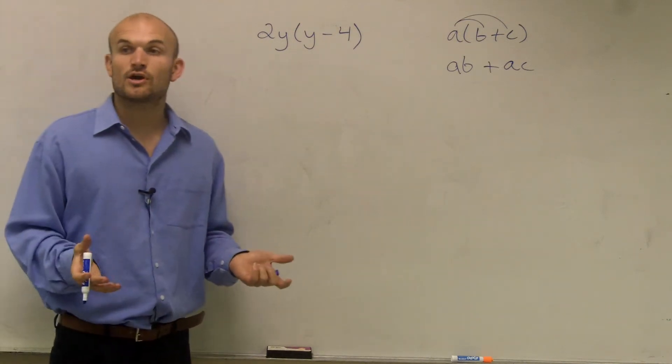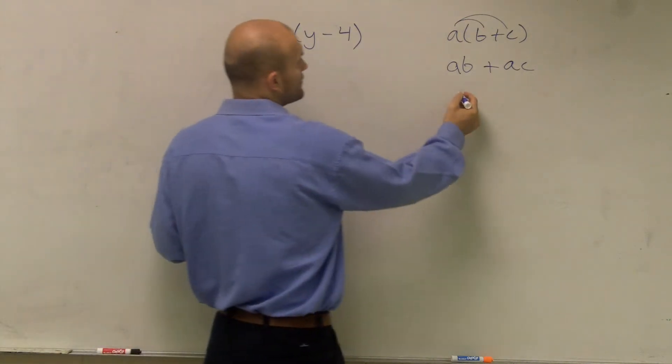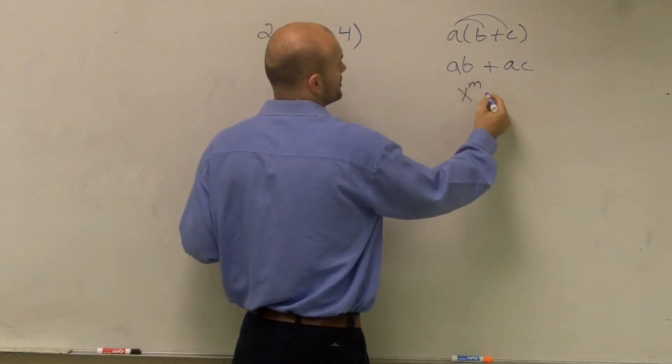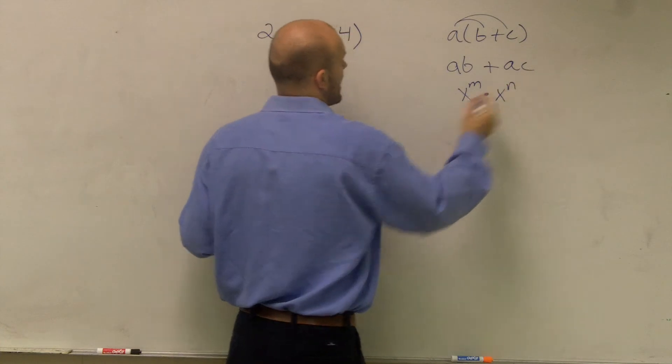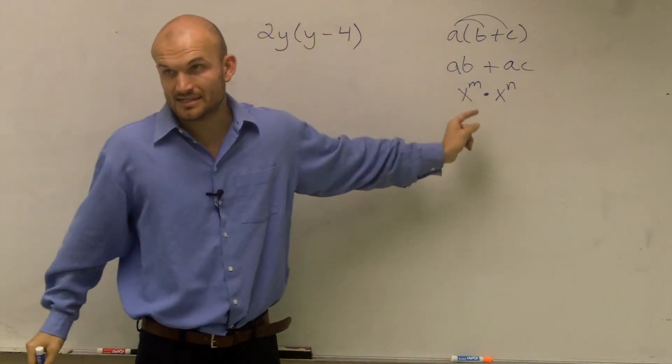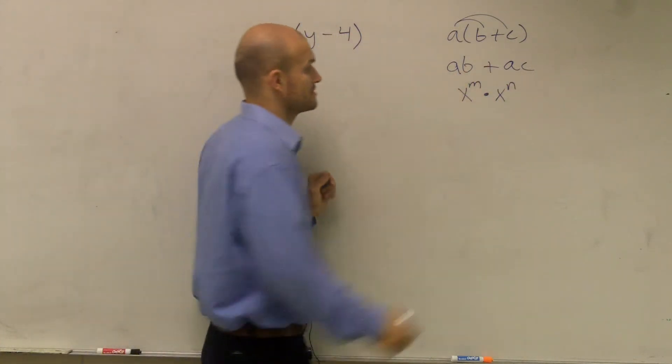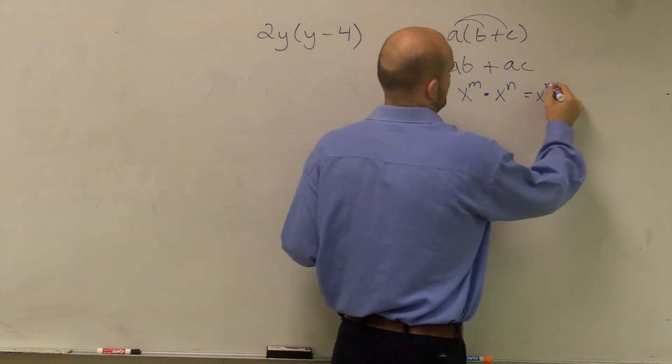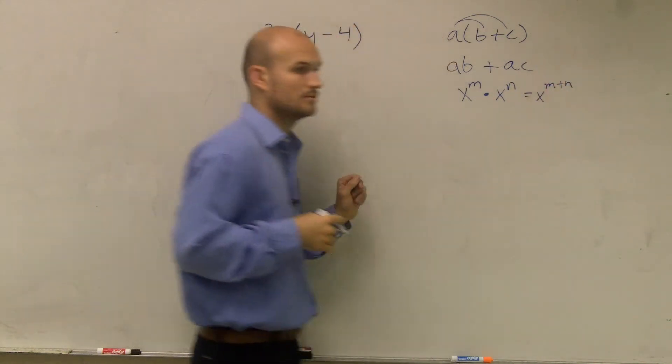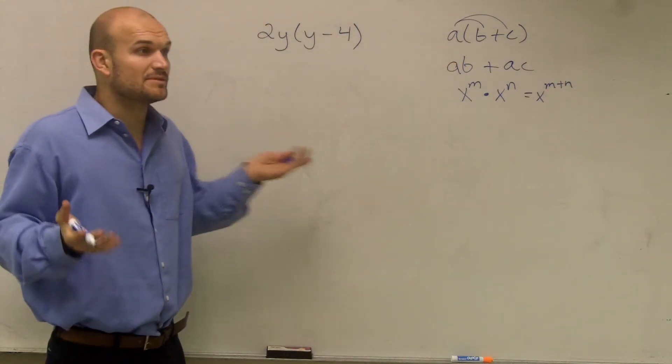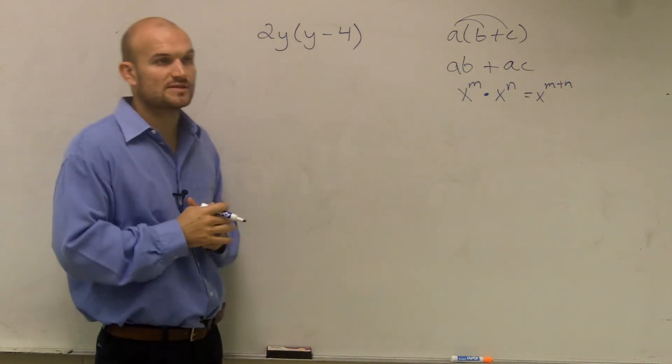The next thing is something else that we've already learned in this class, which is whenever you multiply a monomial times another monomial and they have the exact same base, you add the exponents. So what I'm going to do is just use those two rules to help me solve this problem.